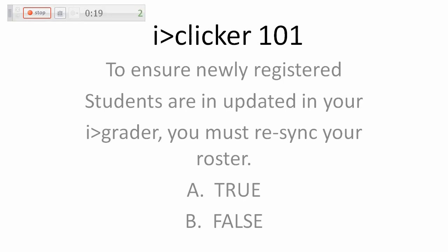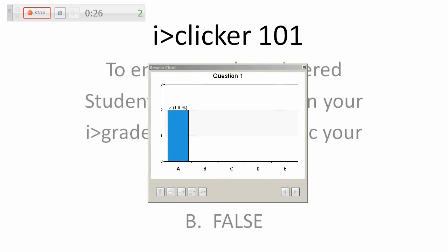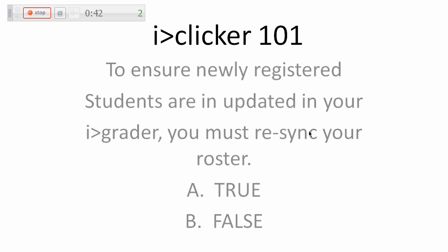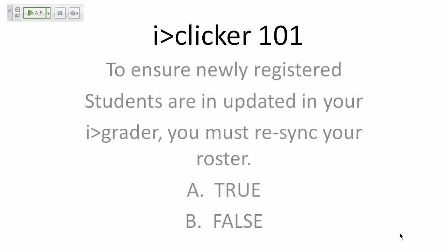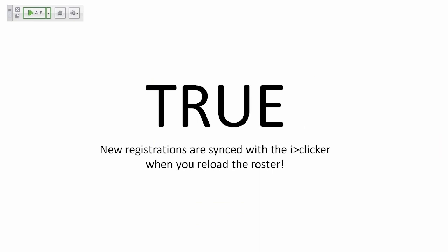I'll show you the results chart in real time by bringing it on stage. You'll notice that in real time people can adjust their answers and changes will show on the board. You could show these results to your students during the poll, but for questions you don't want to reveal, make sure to toggle that off. Answers can be changed as long as the poll is open. To stop the poll, hit the stop button — once stopped, no one can respond further. The answer to that question was True: new registrations are synced with iClicker when you reload the roster, which we'll cover shortly.